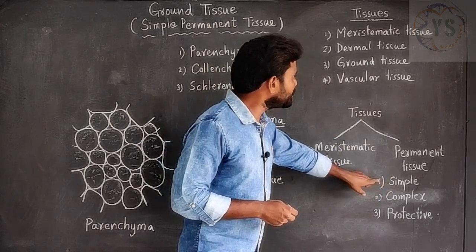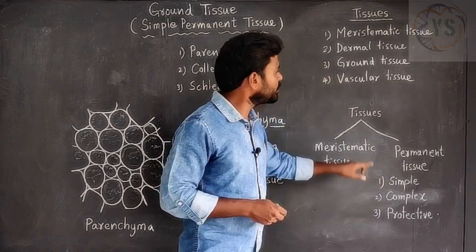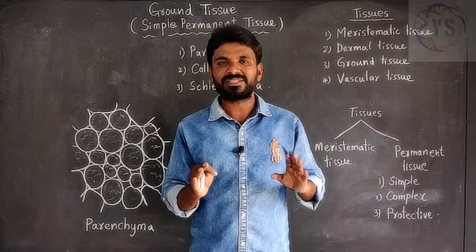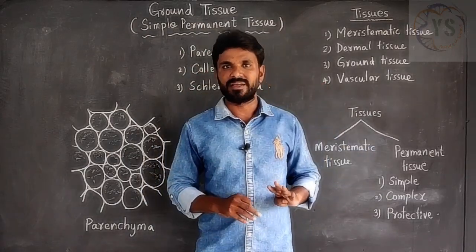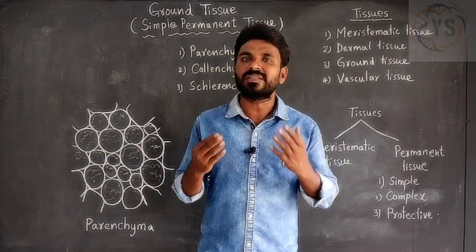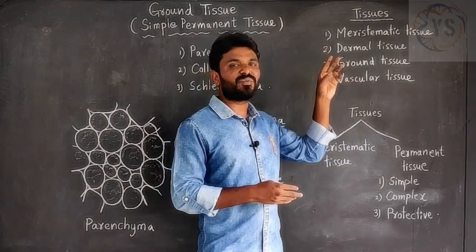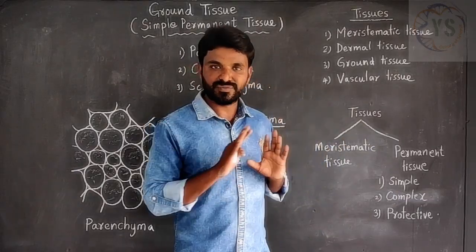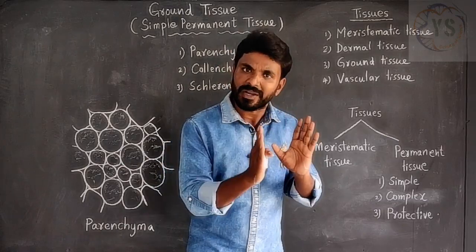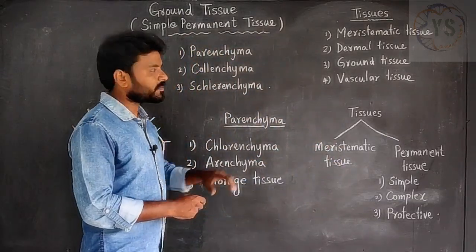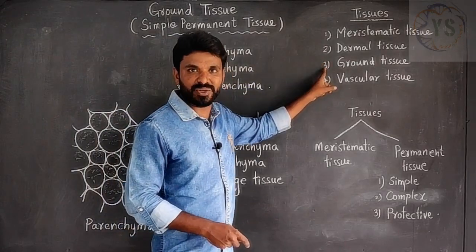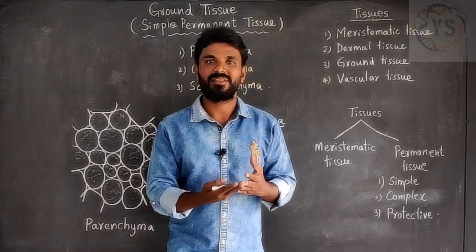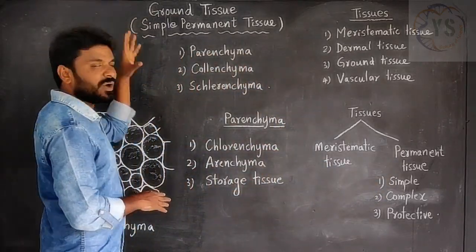Simple permanent tissue means ground tissue, complex permanent tissue means vascular tissue, and protective tissue means dermal tissue. In plants, only four kinds of tissues are present — we are just naming them differently under different classification systems. Now let's concentrate on our topic: ground tissue, which is also called simple permanent tissue.